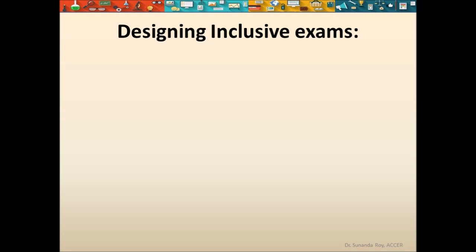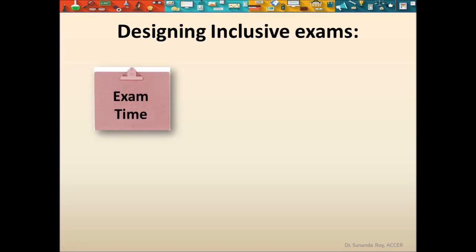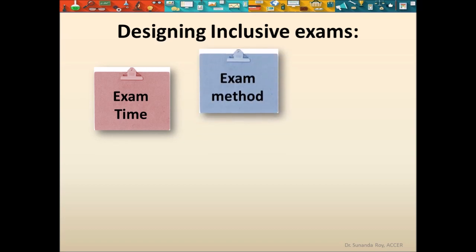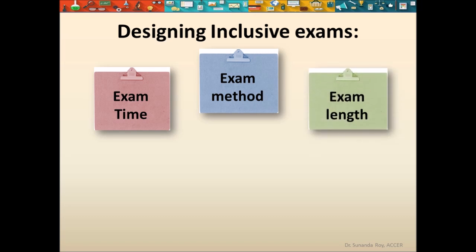This can be done by making modifications in the following aspects of the examination. Extra time can be given to students with disabilities like slow learners. The exam method could also change — for example, visually impaired students could be given writers for a paper-pencil test, or they could be assessed orally. The teacher can also opt for an open book examination, mainly to cater to students with mental impairments. The length of the examination can also be modified — for example, a hyperactive student could be given a series of short tests over a period of time rather than one long sitting.